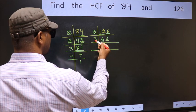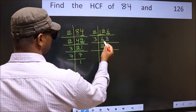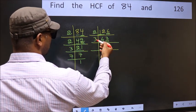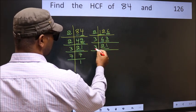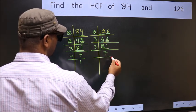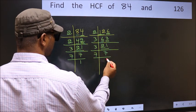First number 6, when do we get 6 in 3 table? 3 twos are 6. The other number 3, when do we get 3 in 3 table? 3 ones are 3. Now 21, 3 times 7, 7 is a prime number. So 7 times 1 is 7.